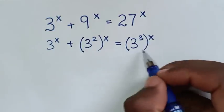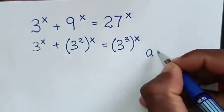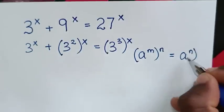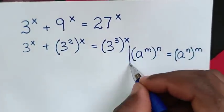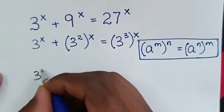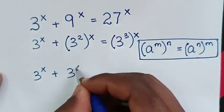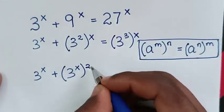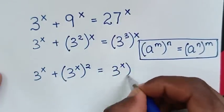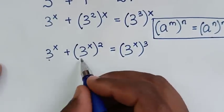Next, we apply the exponential rule: (a^m)^n equals (a^n)^m. Using this rule, (3²)^x becomes (3^x)² and (3³)^x becomes (3^x)³. So the equation becomes 3^x plus (3^x)² is equal to (3^x)³, and now 3^x is a common factor.